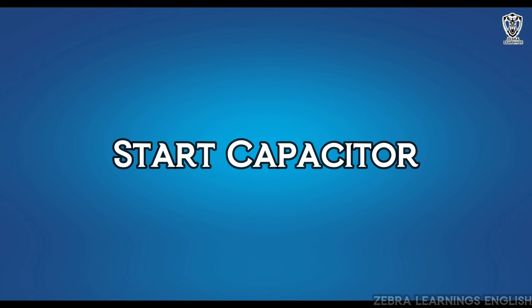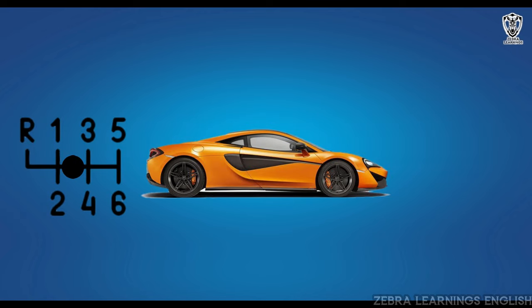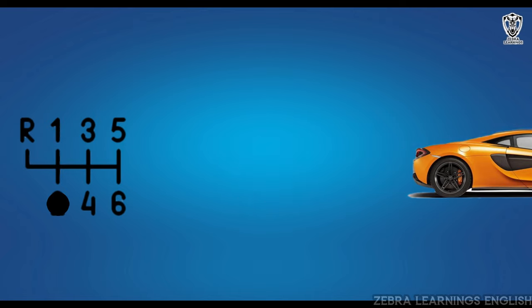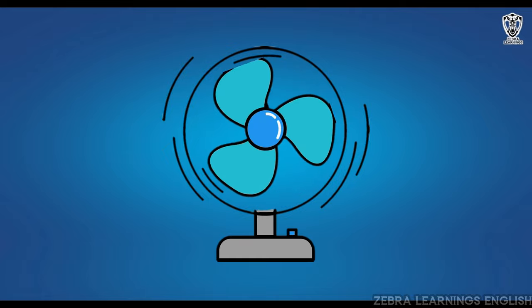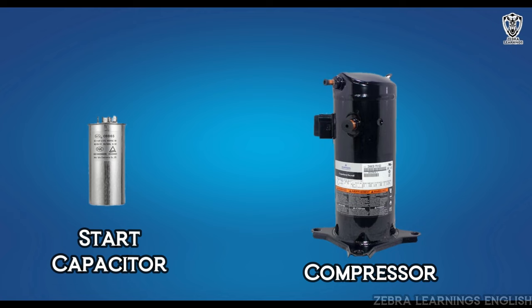Now we can know about starting capacitor. To run any unit, it required more starting torque. For example, when we drive a car, we move the car in first gear. We change the gear only after the car moves. The first gear has more torque. Similarly, starting an electrical equipment requires high torque. High torque is also required to start the compressor in the outdoor unit of the AC. As the required torque is not available in the normal power supply, we give the required torque to the compressor through the start capacitor.